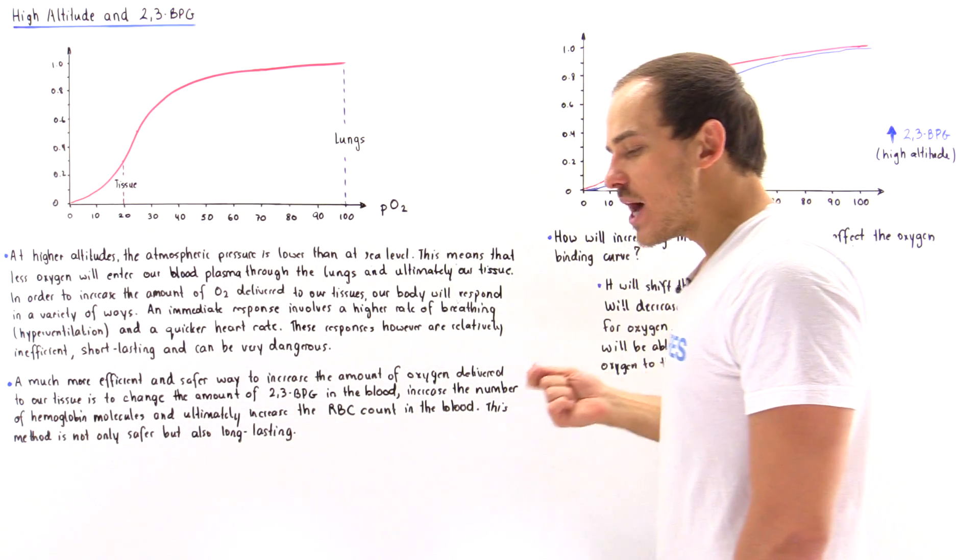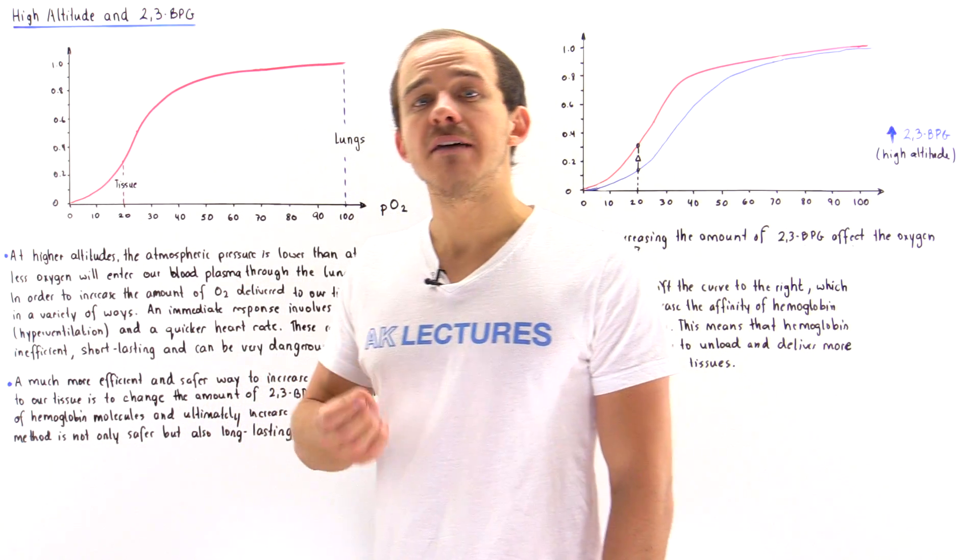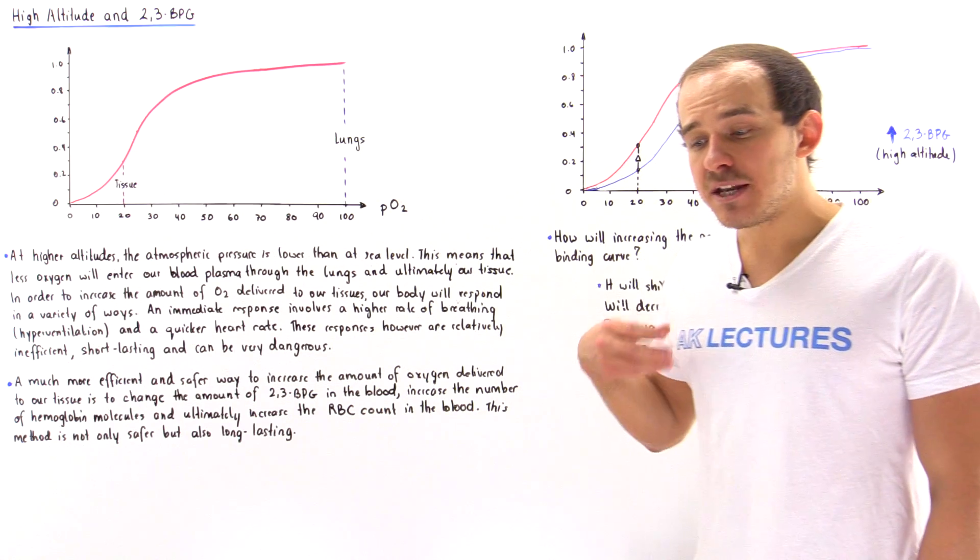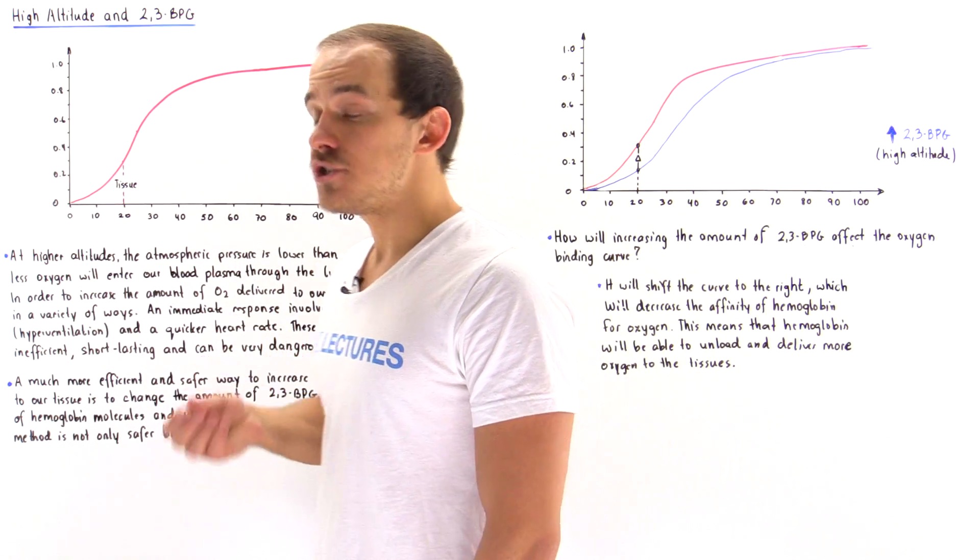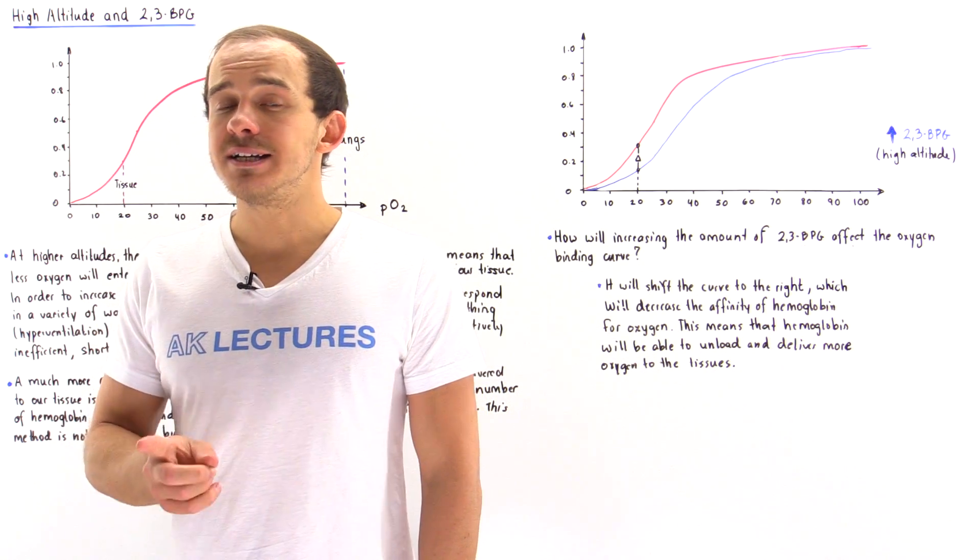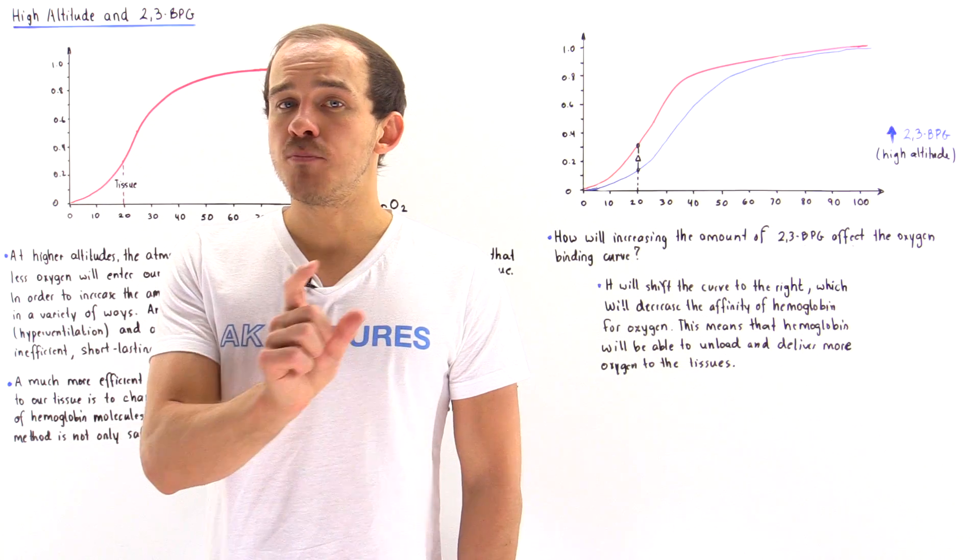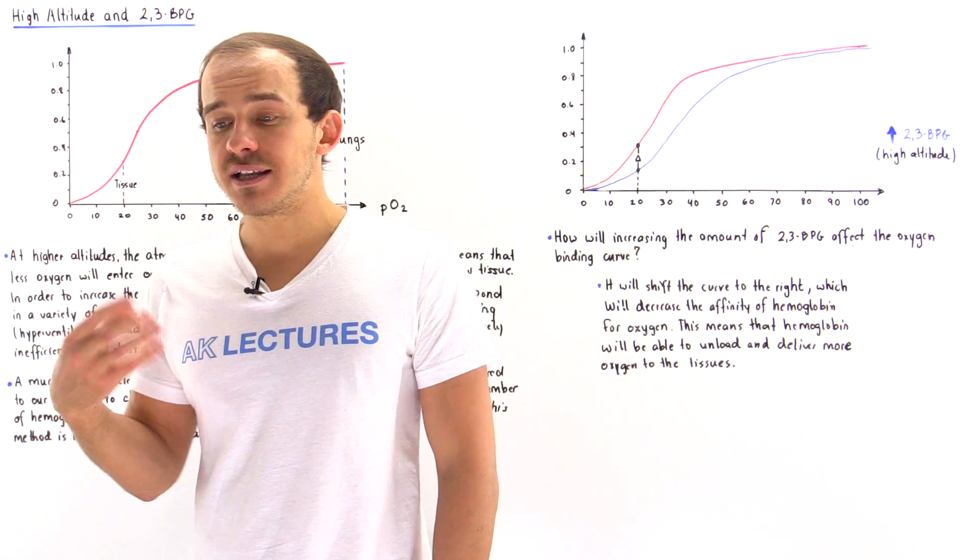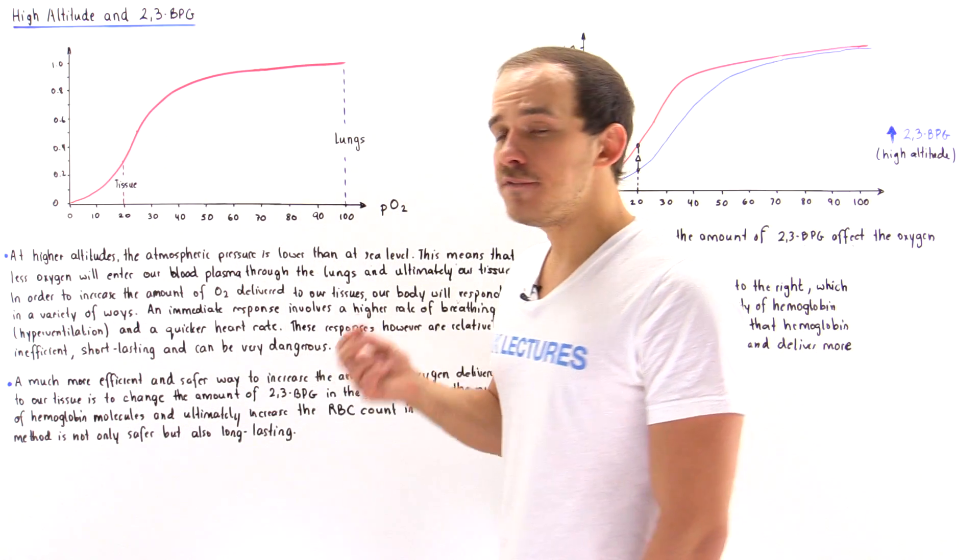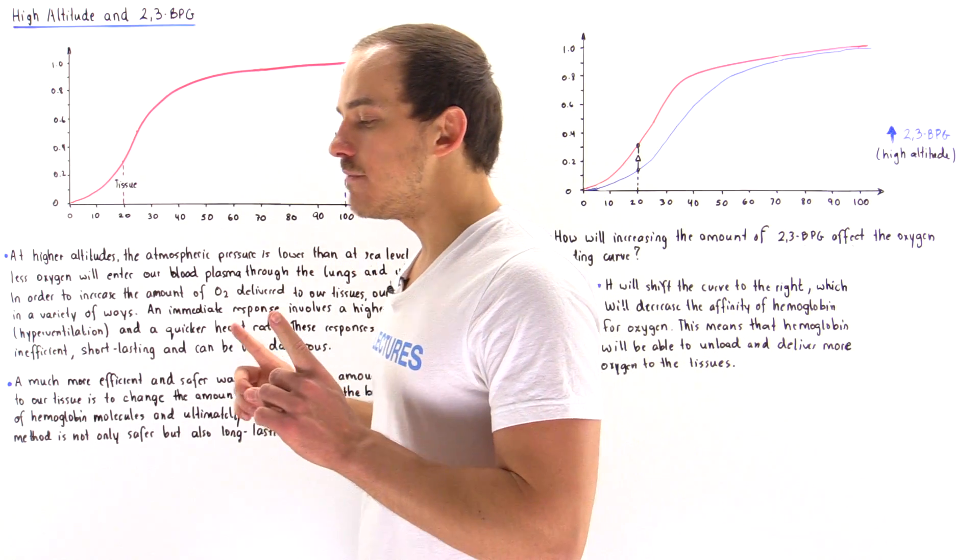At sea level, the total atmospheric pressure is 760 millimeters of mercury. Because the amount of oxygen in the atmosphere is 21 percent, to find the partial pressure of oxygen, we simply multiply 0.21 by the total pressure of 760. That gives us about 159 millimeters of mercury as the partial pressure of oxygen at sea level.